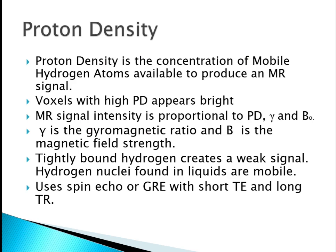Tightly bound hydrogen creates a weak signal because those hydrogen protons do not have the ability to move — they are comparatively immobile. Therefore the MR signal originates from loosely bound hydrogen nuclei, known as mobile hydrogen. If we consider cortical bone, it appears black on an MR image — not because it does not emit an MR signal, but due to the absence of mobile hydrogen protons. Because of this, bony structures look like air, as they have a low percentage of mobile hydrogen protons.